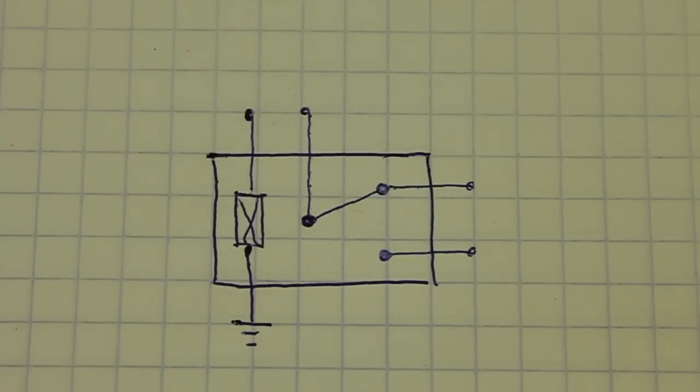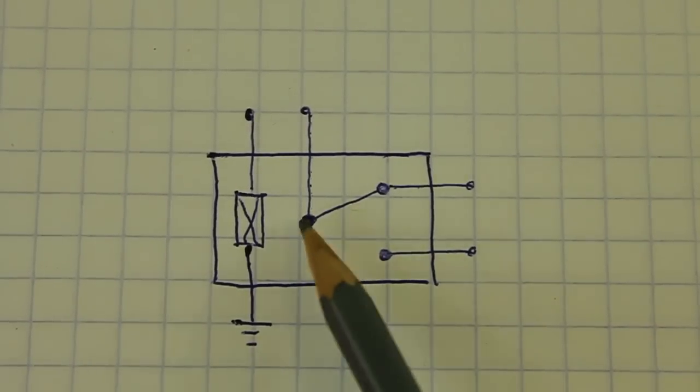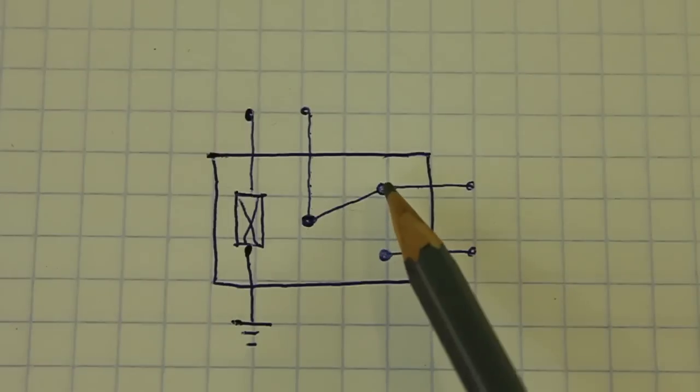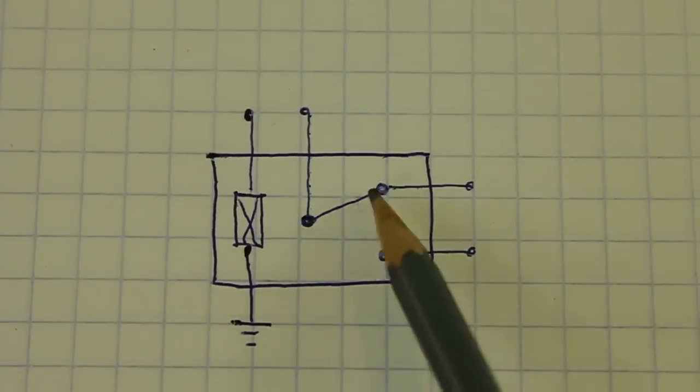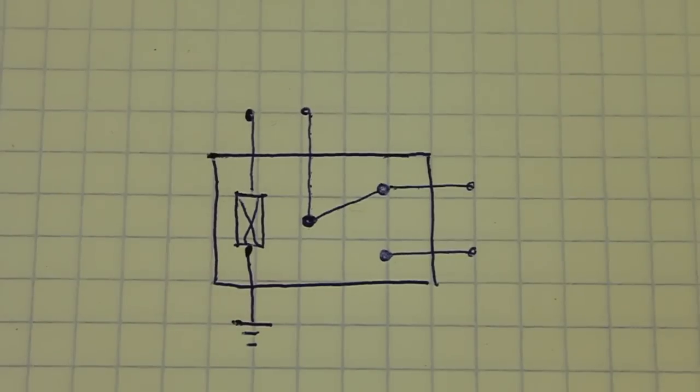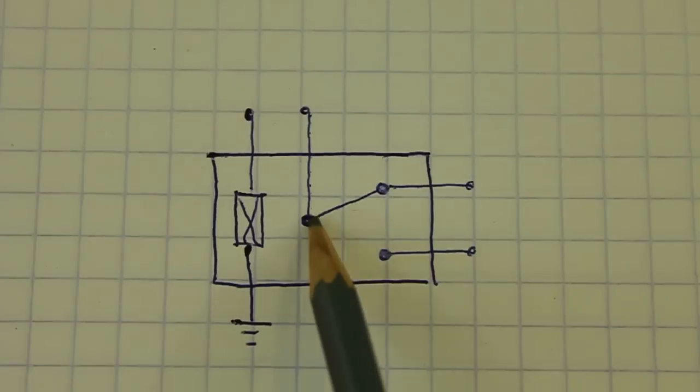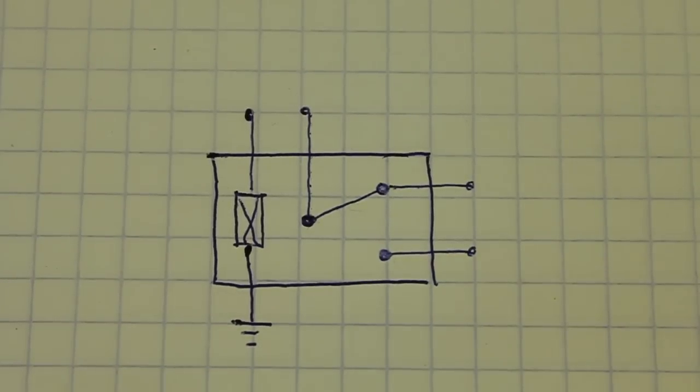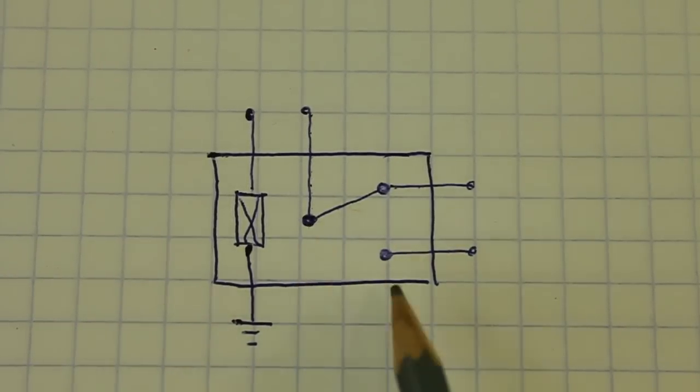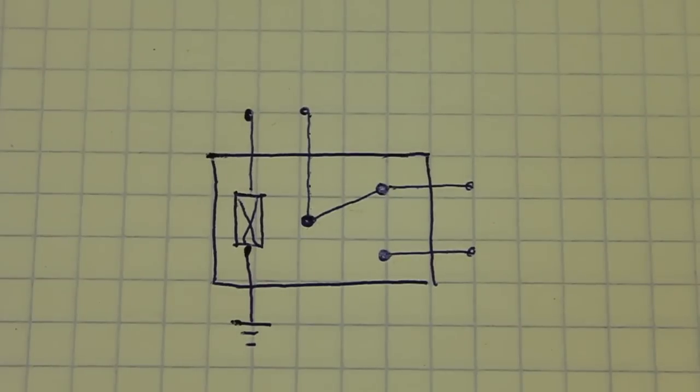When the coil is not energized, we have the common and the normally closed contact. We have a connection between them. But when we energize the coil, this switch moves to the other position and now we have connection between the common and the other contacts.